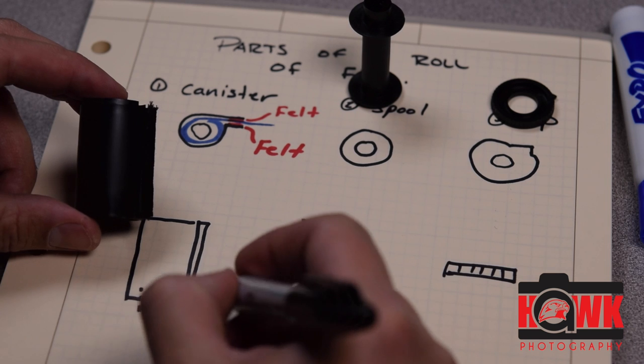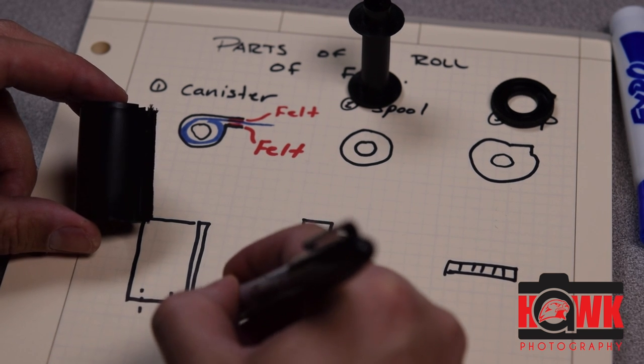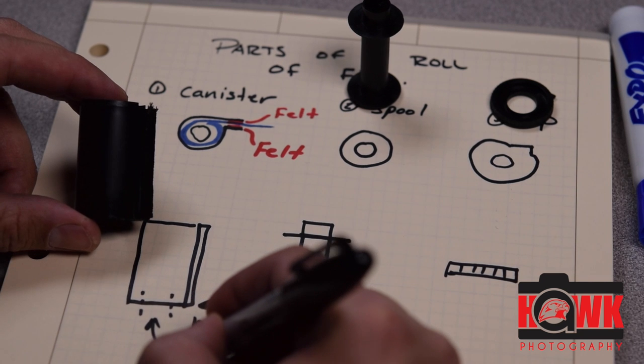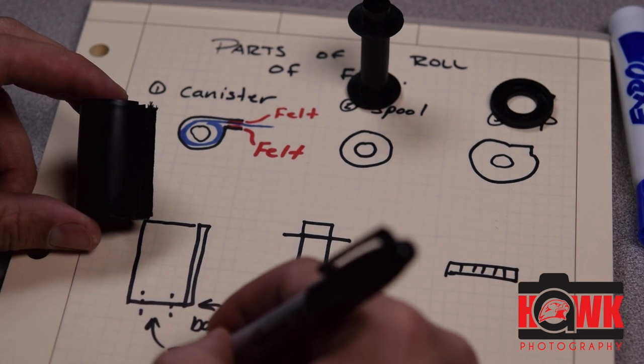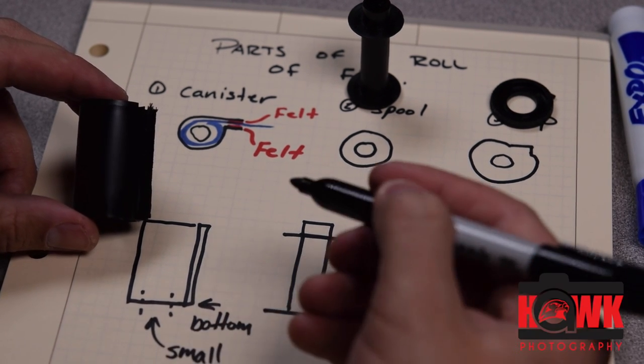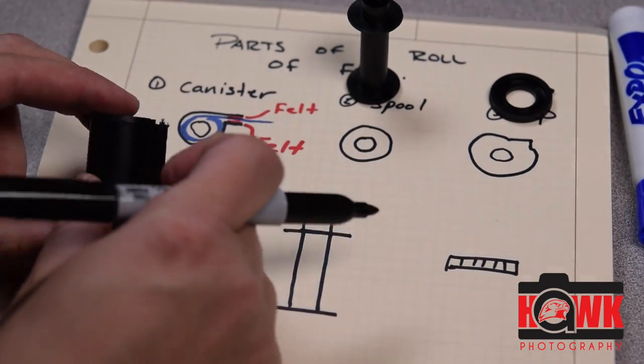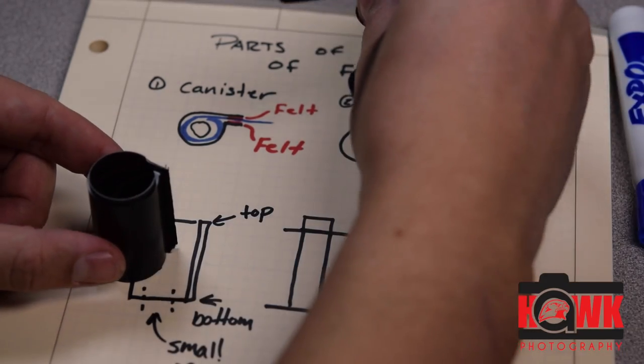And that end with the small opening, I refer to as the bottom. This here is the small opening. The top has the large opening that will accept the spool.